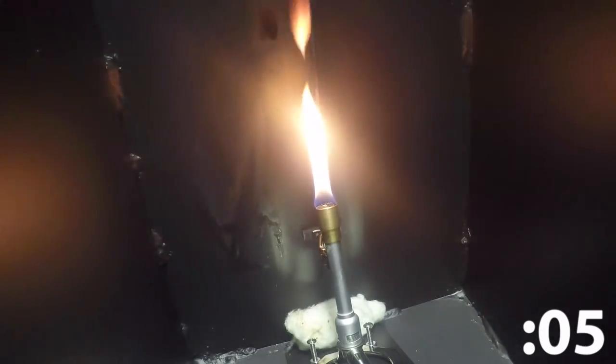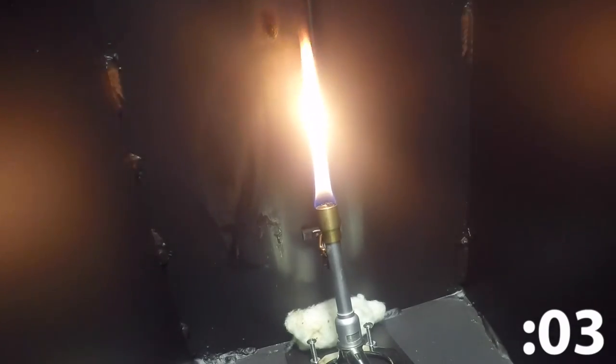When the cable jacket chars and hardens around the cable core, it protects the core from ignition by limiting the fuel available to feed the flame.